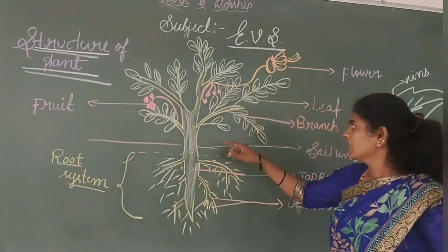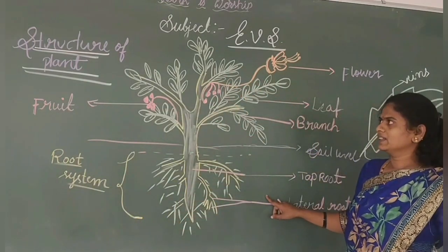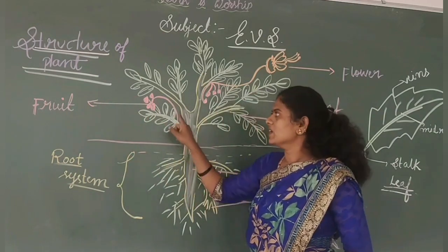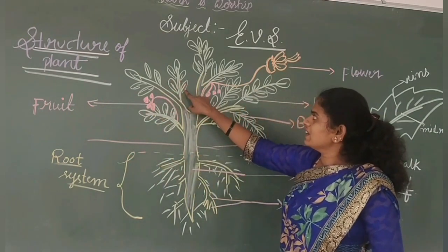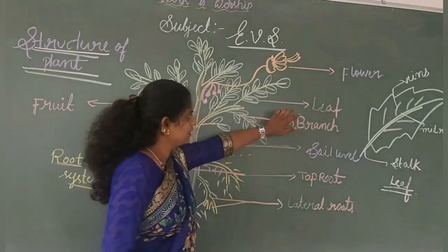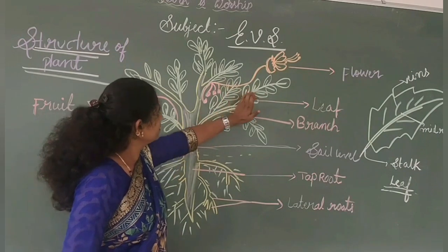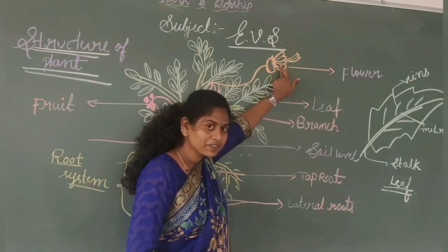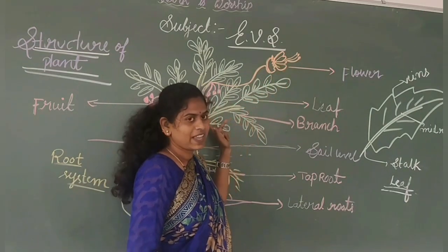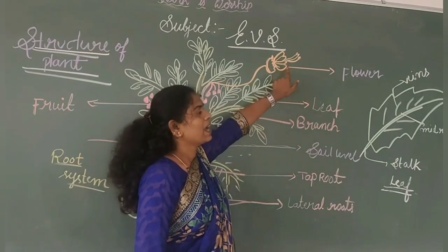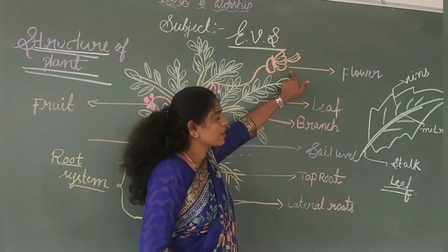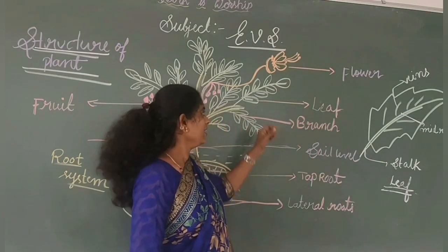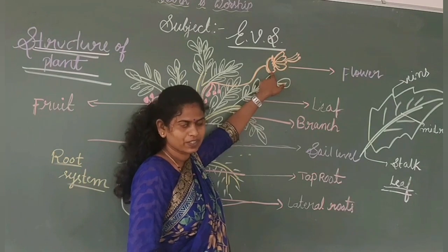Look at here — these are the different parts of the plant. The pink color represents the fruit. The green color represents the leaves. Next are the different branches of the tree. Next is the flower. Flower is the most important part of the plant because it produces the seeds, and that seed produces a new plant. That's why flower is the most important part.